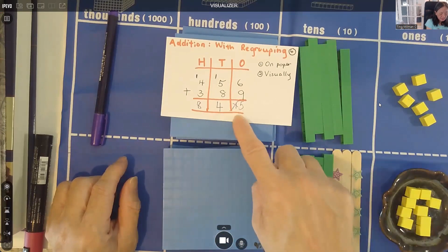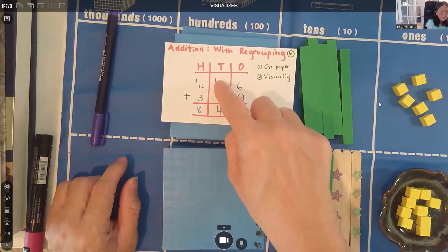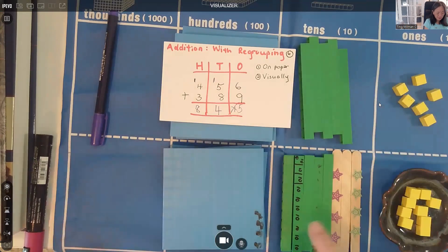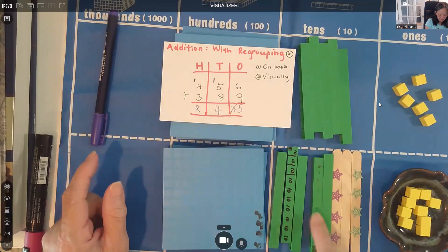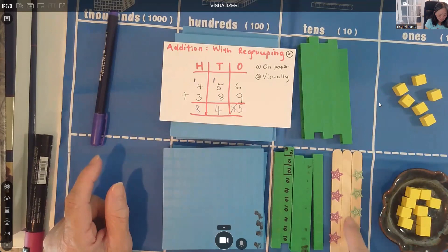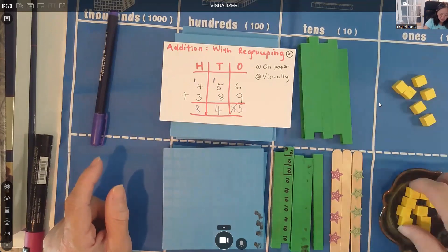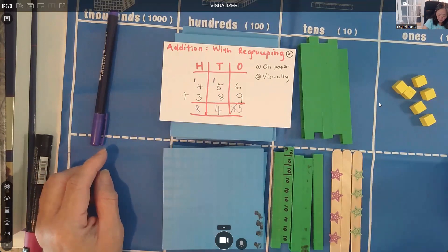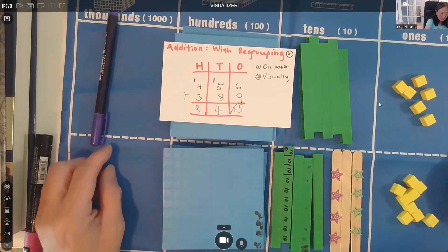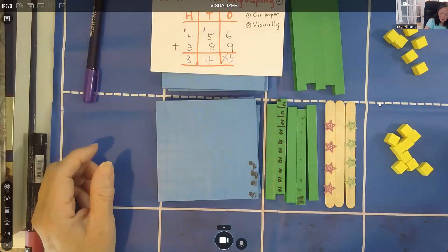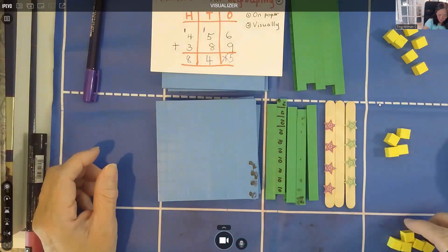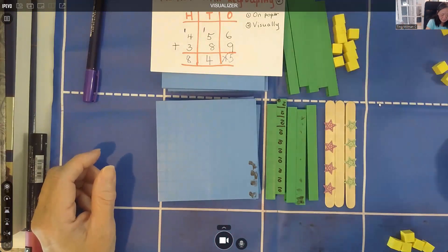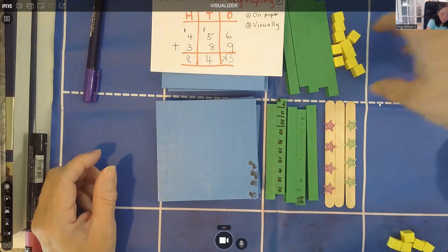Now we have five ones remaining. For the tens: five plus eight — counting on gives thirteen tens. But because we converted the 15 into one ten plus five ones, we pull out five ones as our answer. The ten ones become one ten — 10 — joining the tens family.